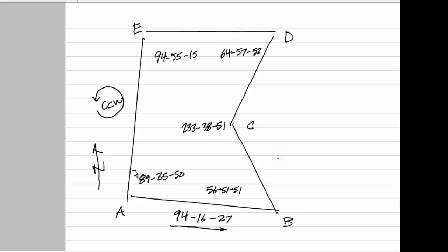So if we're going counterclockwise, that means we need to come up with the direction going this way, this way, this way, and this way for the remaining four sides. Before we can do that, we need to adjust the angles. So first we need to determine the angular closure.